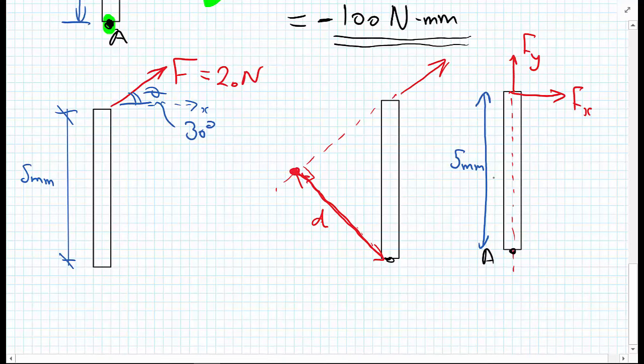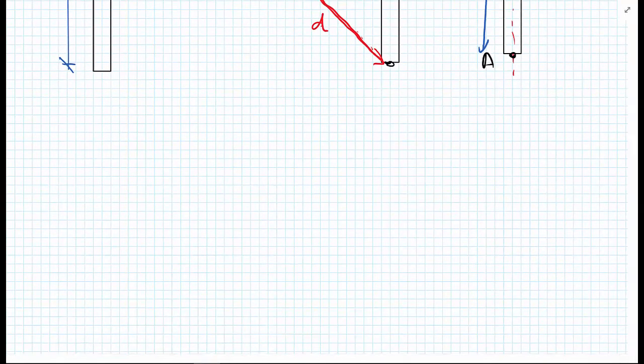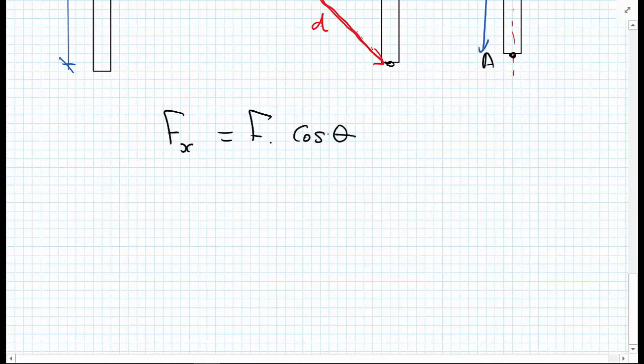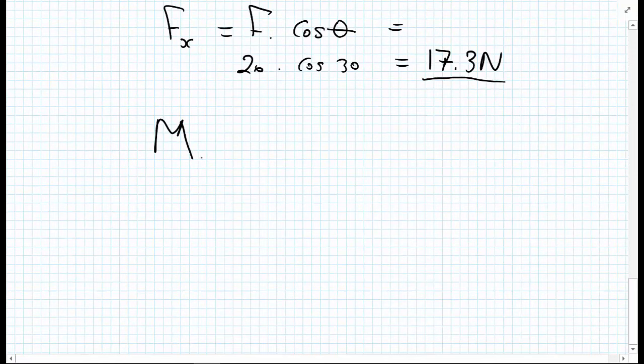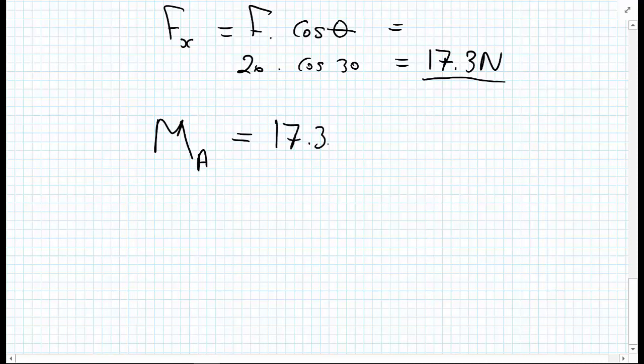Let's do the calculations. Fx is equal to F times the cos of the angle theta. So that was 20 multiplied by cos of 30, which equals 17.3 Newtons. Now, armed with that information, the moment—and this time rather than just calling it M, I'm going to give it the subscript A to denote it's the moment about point A. So M at A equals 17.3, the Fx component of the force, multiplied by the lever arm of five millimeters. Recognizing that's going in a clockwise direction gives me a moment of minus 86.6 Newton millimeters.